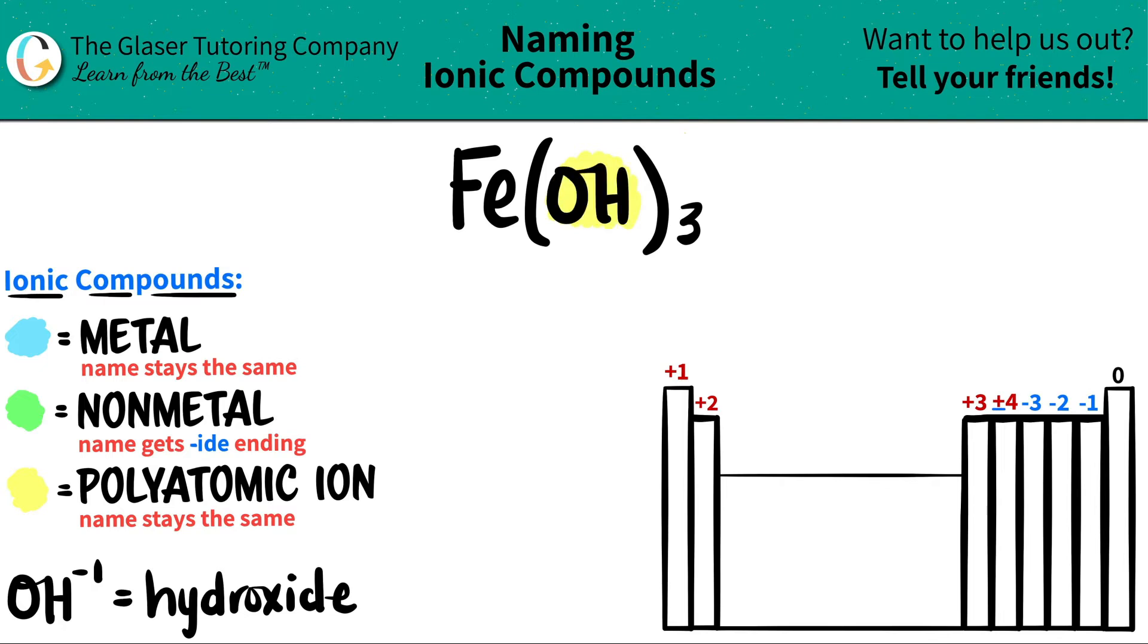Now the only thing I have to identify is the iron. Iron Fe is a metal because it's right here on the periodic table. Anything in this block is a transition metal. So let's start naming.